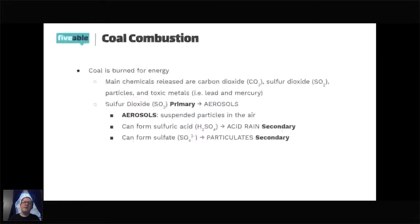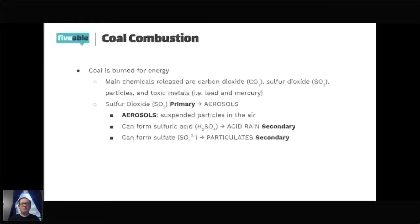So, coal combustion. As many of you probably know, coal is typically burned for energy or heat — in a factory they might burn it for energy to keep things going or for heat. The main chemicals released when coal is burned are carbon dioxide (CO2), sulfur dioxide (SO2), particulate matter, and toxic metals such as lead and mercury. It's important to understand not only the chemicals released but their formulas, because those are very important when looking at how air pollutants change over time.